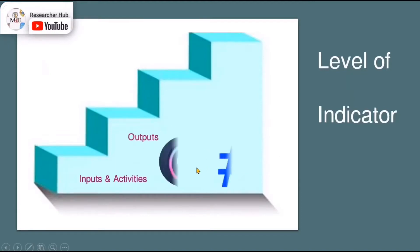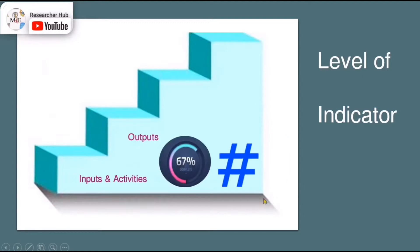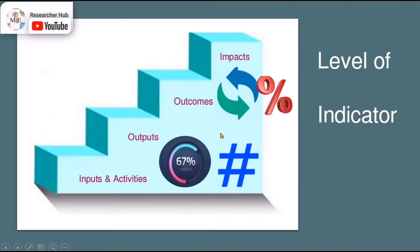There are two levels of indicators. The first level demonstrates the progress of the project, which is more focused on number — very often it starts with number. Another level of indicators is used to measure the changes, which very often starts with percentage. So the first is for demonstrating the progress, and the second level is for measuring changes.